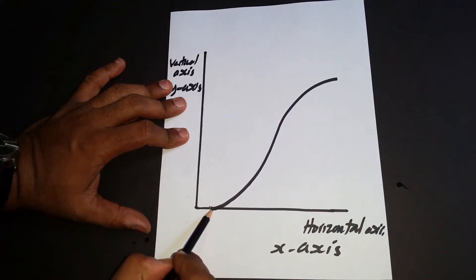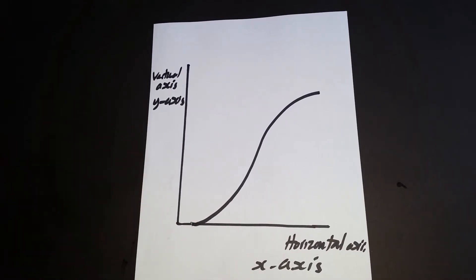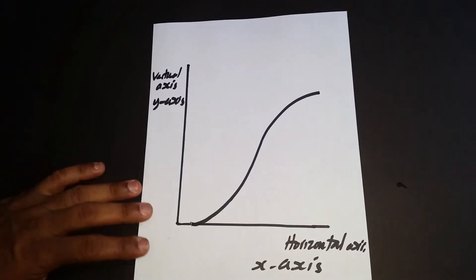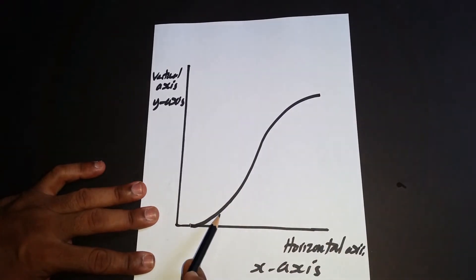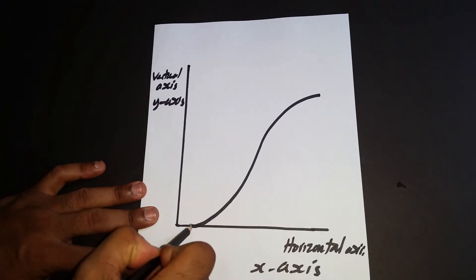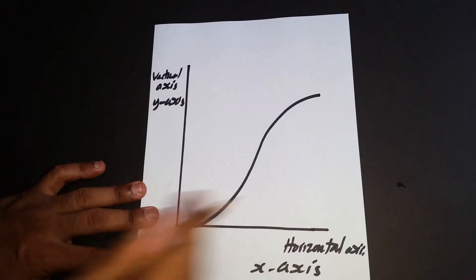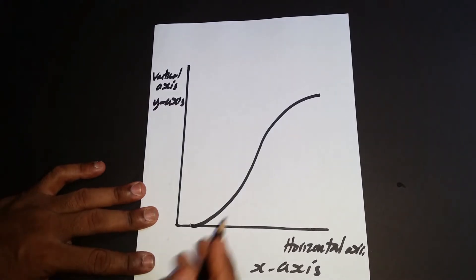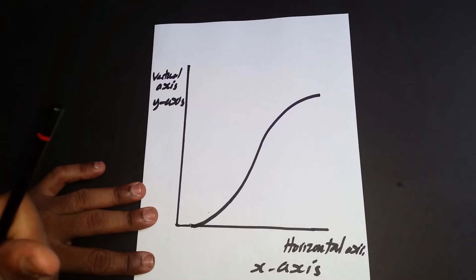The curve must touch the horizontal axis, but it doesn't necessarily have to come from the intersection of the two axes — it can start from anywhere along the x-axis. I'm pointing those things out early because those are the things students normally make errors with. So: S-shape, must touch x-axis, and it doesn't have to originate from the origin.